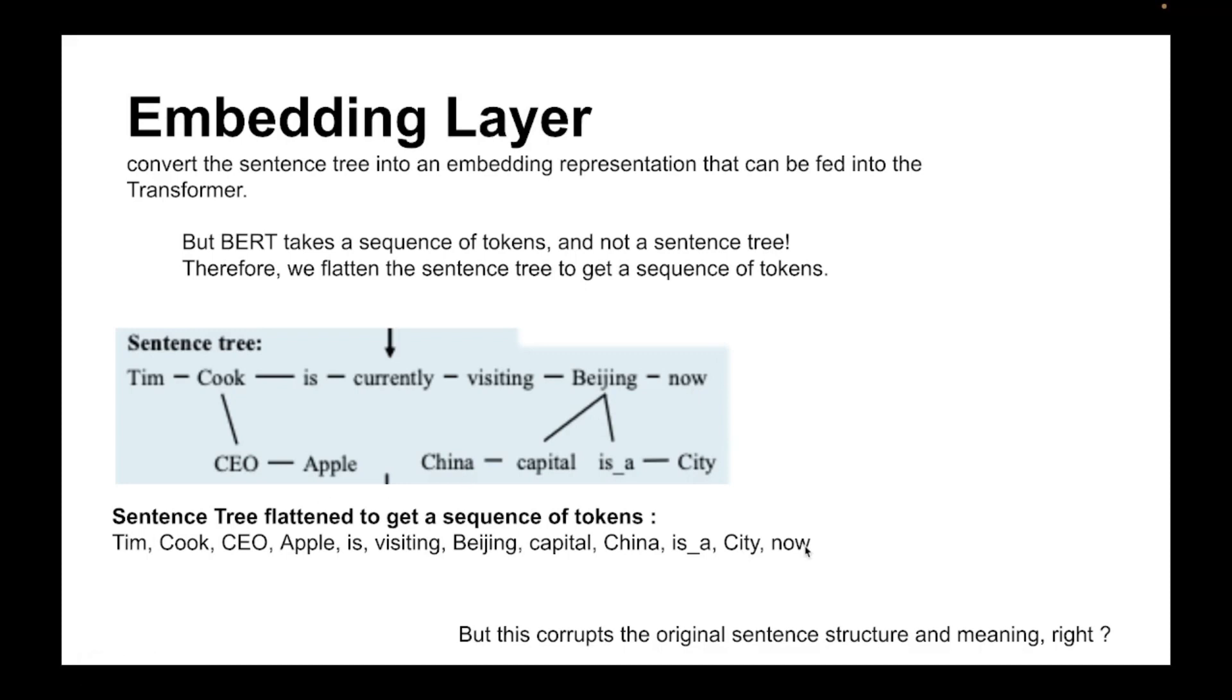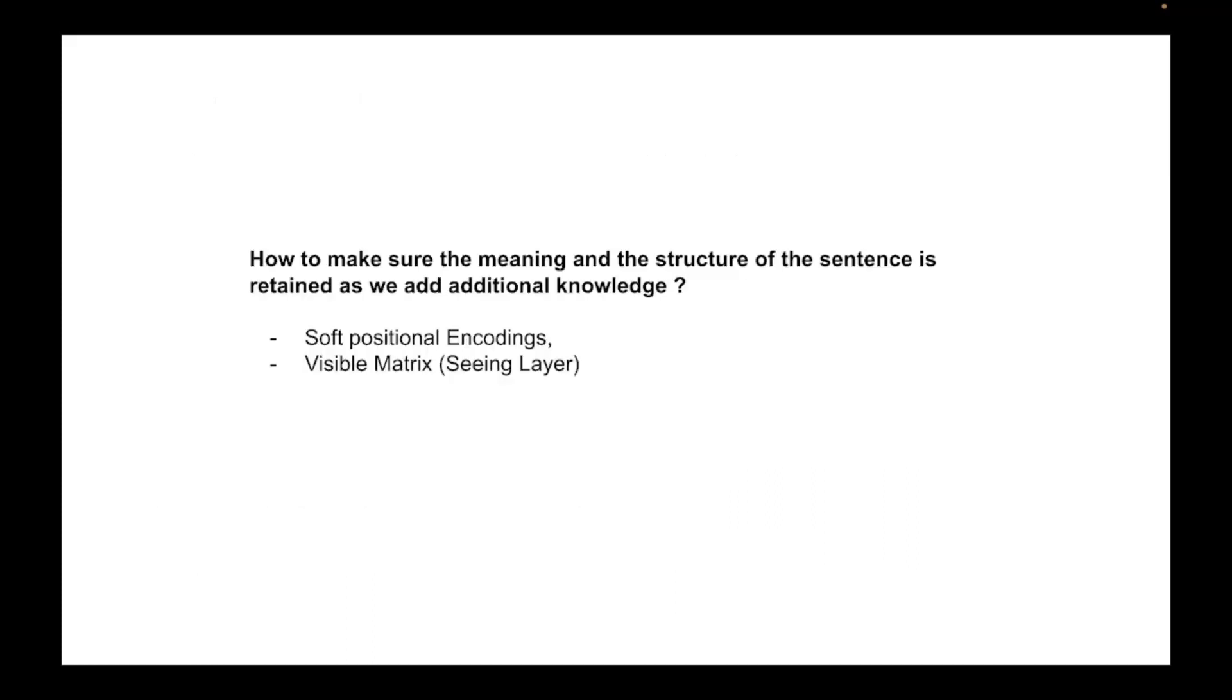Now the problem is this sequence of tokens has corrupted the original sentence structure and the meaning, right? So how do we solve that problem? So K-BERT proposes the following two mechanisms to solve this problem of the original sentence losing its meaning when we add additional knowledge information to it. The first one is soft positional encodings and the second one is visible matrix. So I'll be explaining both of these.